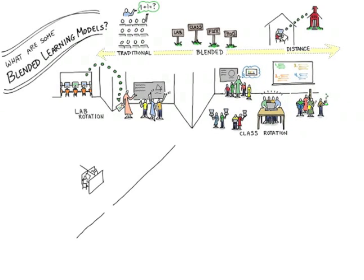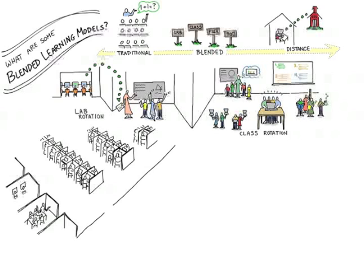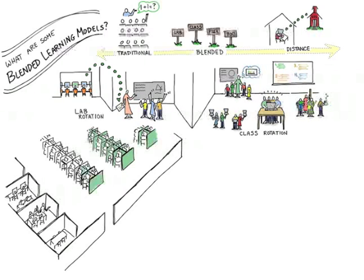In the flex model, the learning lab might look like a large call center with banks of computers. Around the edges of the lab might be smaller breakout rooms for classes. In this model, the students work mostly on the computers, and a teacher might pull out a group of students for seminar, intervention, or direct instruction.